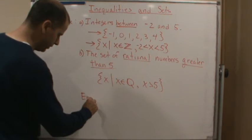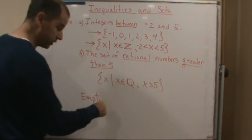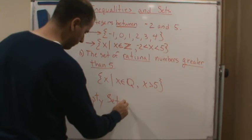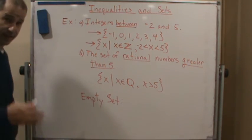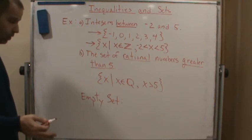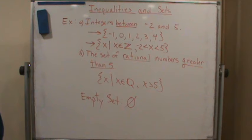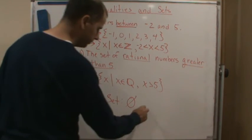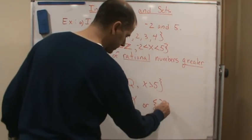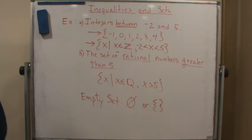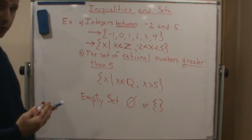So how do we denote the empty set? Well, the empty set is denoted two different ways, and either way is fine. We can denote that either using the circle with the slash through it, or we can just use curly braces with nothing between them. Either one is fine. You'll see it both ways throughout the textbook and most textbooks will use one or the other.